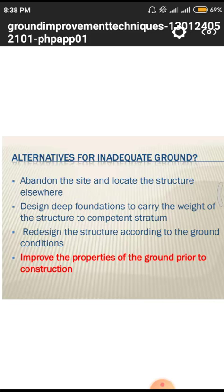Next, we improve the properties of the ground prior to construction. Before taking up a project we modify the ground properties — observing organic matter content, inorganic matter content, and reactive matter content through laboratory tests. We take samples from different layers and observe carbon content in the soil to determine whether it is in an active or inactive state. Active soil causes vegetation damage to surrounding structures, so we avoid such soils by replacing them with industrial waste materials.